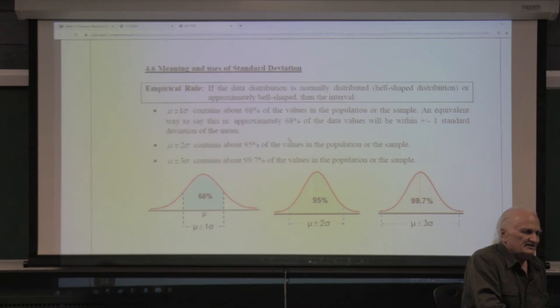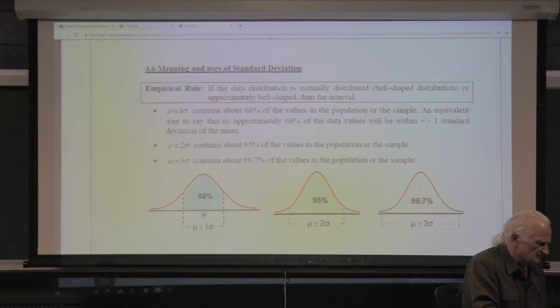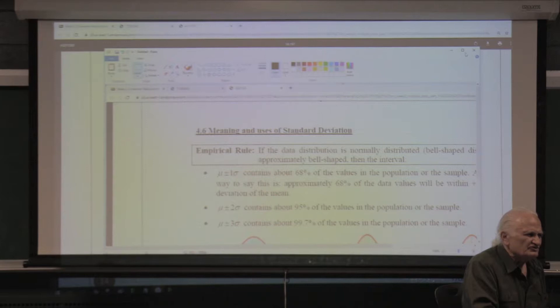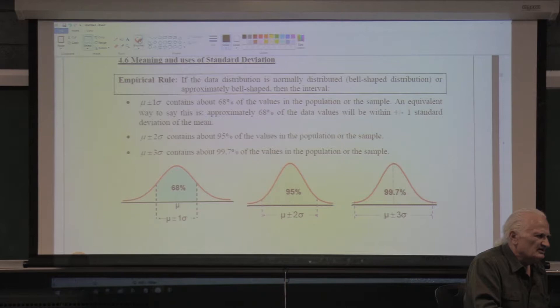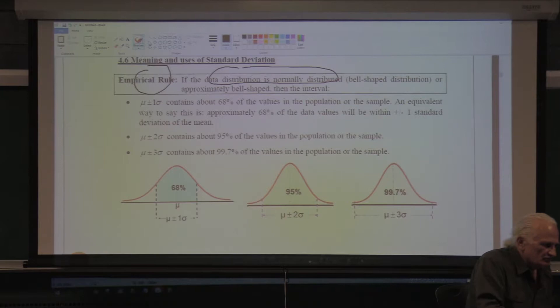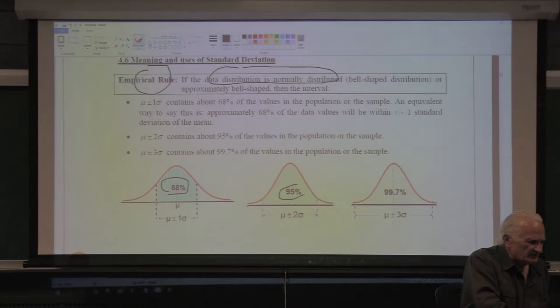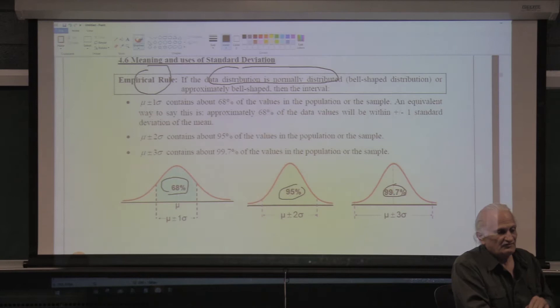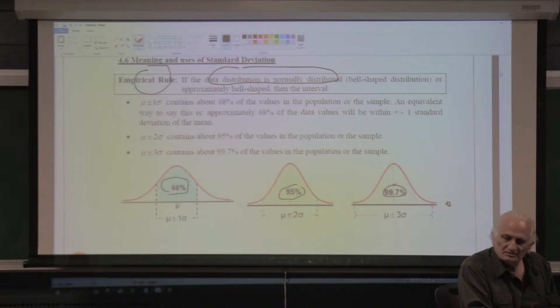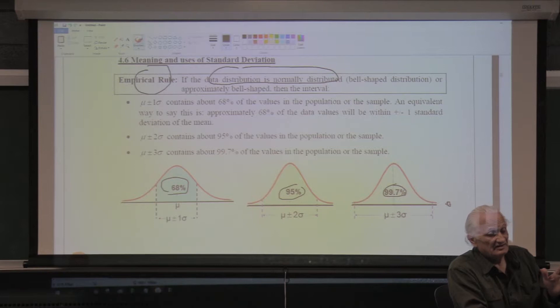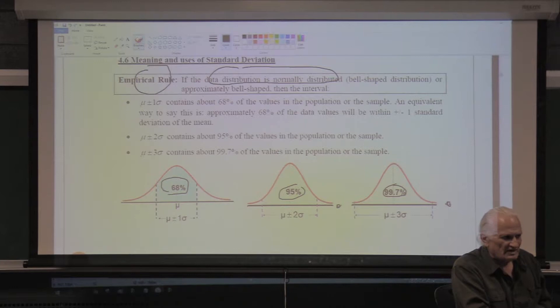This is a review from statistics. If the data is normally distributed, you can use the empirical rule: 68% of the data is within one standard deviation from the mean, 95% within two standard deviations, and 99.7% within three. A lot of companies use this: if data is outside the region beyond three sigma — greater than mu plus three sigma, or less than mu minus three sigma — that is one definition of an outlier. There are many different definitions.